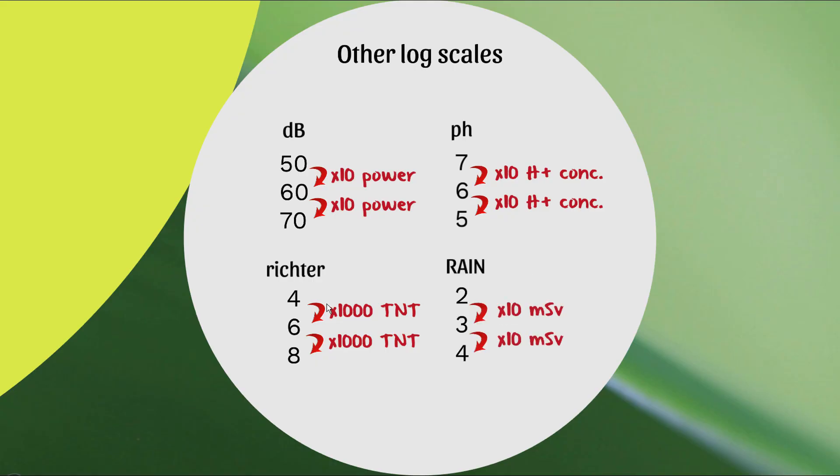Now radioactivity. This one's fresh off the press because only a few years ago, there was an article suggesting a logarithmic scale for radioactivity, and it's called the RAIN scale. I'll put a reference to the paper in the description of the video. But an increase in 1 on this RAIN scale, again, is an increase in 10 times what's called the millisievert, which is essentially a measure of radiation.